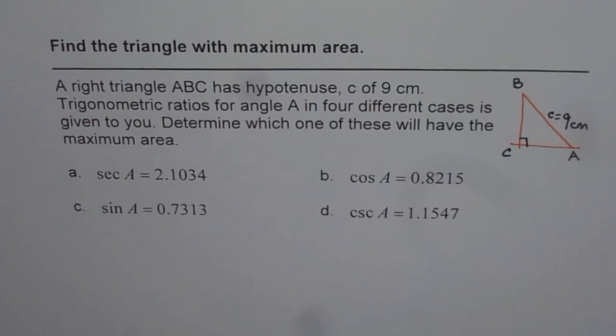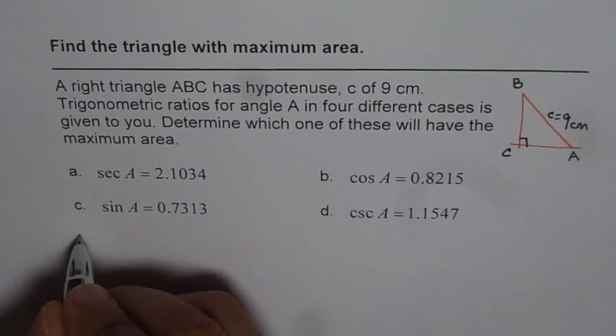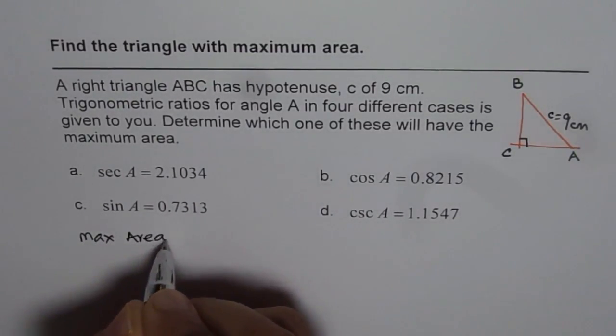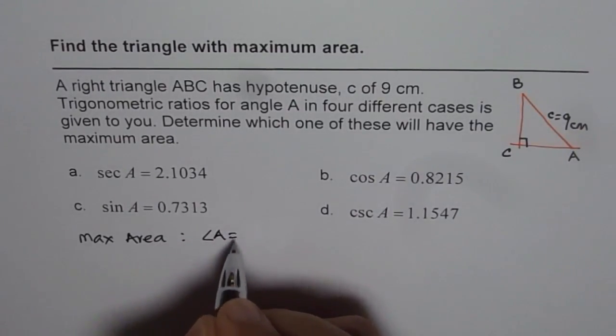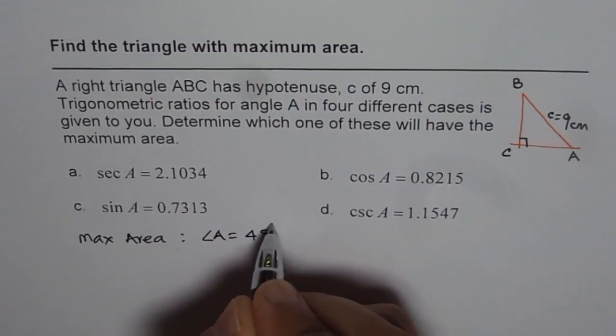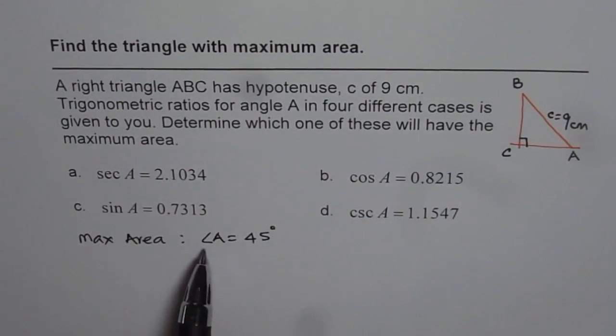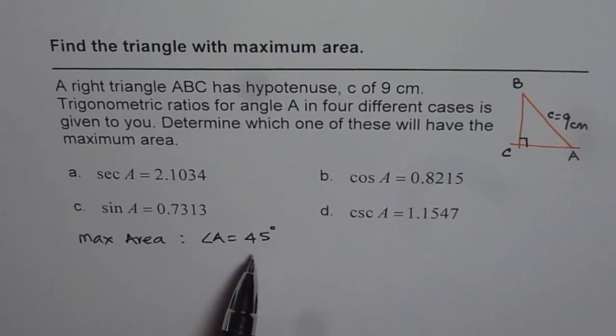You should know that in a right triangle, triangle with maximum area should be with angle A equals to 45 degrees. So a right angle triangle with angle A equals to 45 degrees will actually give you the maximum area.